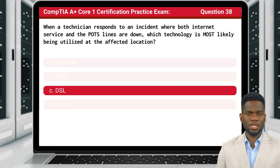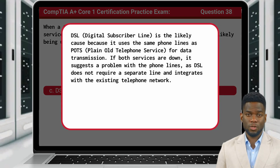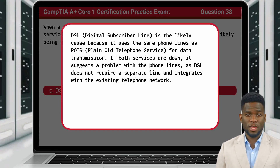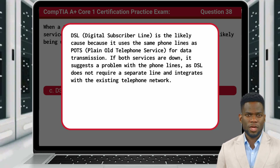The answer is C: DSL. DSL is the likely cause because it uses the same phone lines as POTS for data transmission. If both services are down, it suggests a problem with the phone lines, as DSL does not require a separate line and integrates with the existing telephone network.